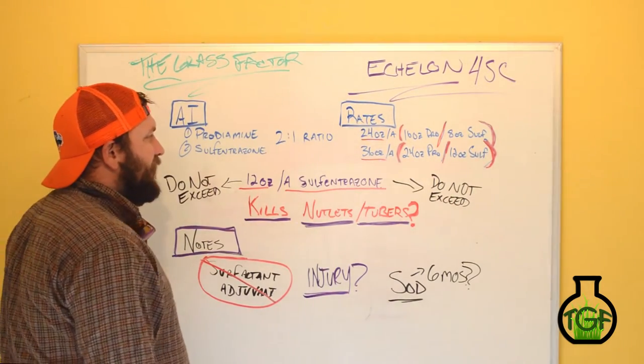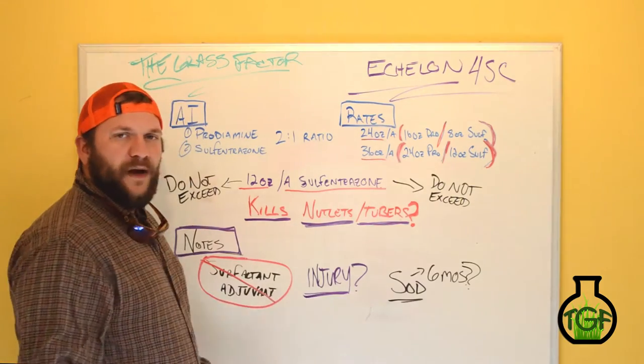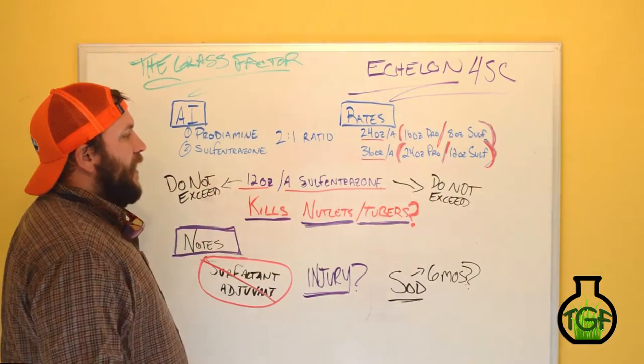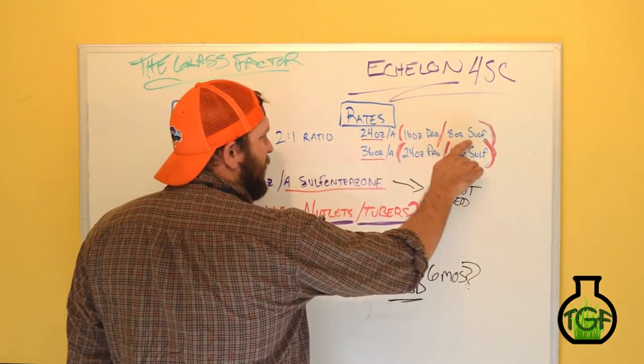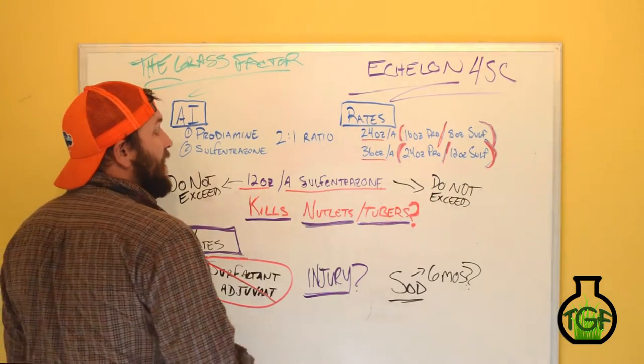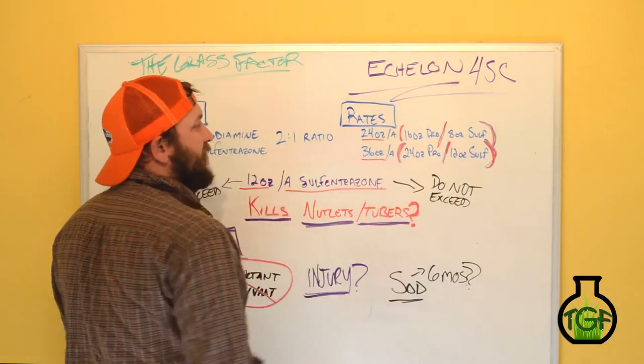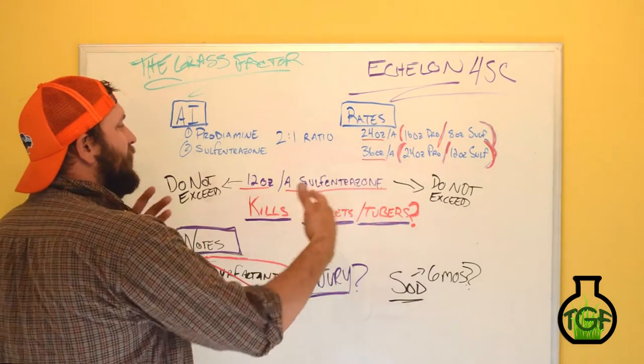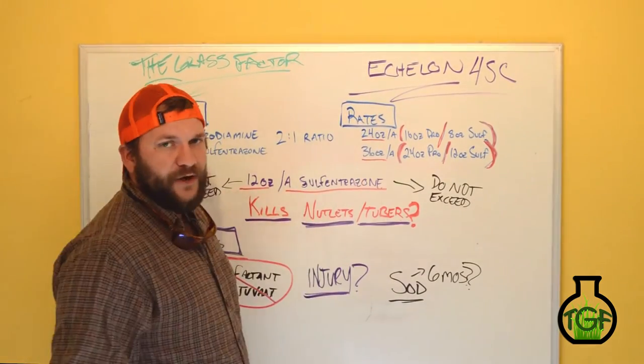So we know it's Prodiamine and Sulfentrazone. The recommended rates on the label, these are just two that I pulled. This is going to be a four month interval, four months of protection from the Sulfentrazone Prodiamine combo, and it's a 24 ounce rate. For those at home, that's going to be 16 ounces of Prodiamine to eight ounces of Sulfentrazone. Eight ounces of Sulfentrazone to the acre, that's a high rate of Dismiss. And then if we were going up to the five months of control, we're looking at 24 ounces of Prodiamine and 12 ounces of Sulfentrazone. This is a yearly maximum of Dismiss right here. When it comes to incorporating this into your program, it's important to pay attention to your yearly maximums based on how much Echelon you're going to be putting down.